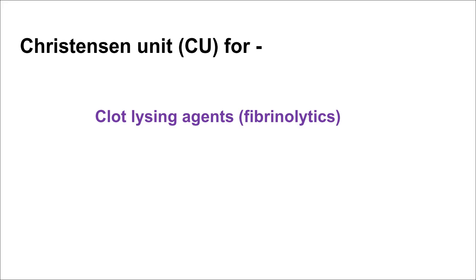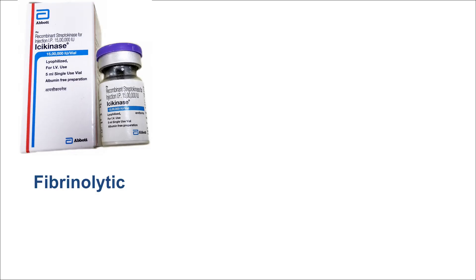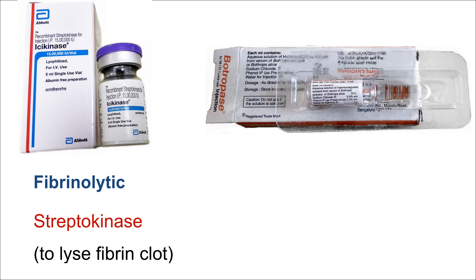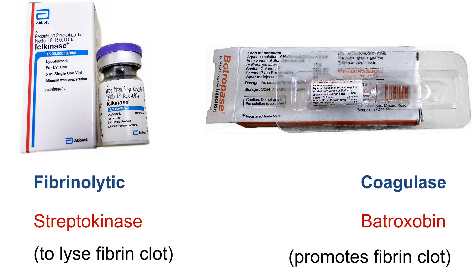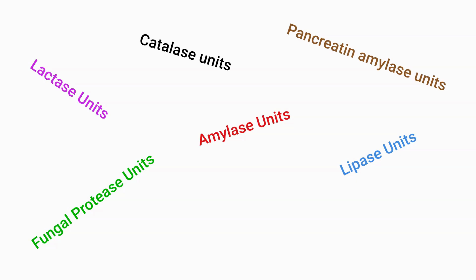Interestingly, the Christensen unit can also be used to quantify coagulases that promote formation of a fibrin clot. Here is a fibrinolytic preparation containing streptokinase used to lyse fibrin clots, and this one is a coagulase preparation with opposing action containing batroxobin that promotes hemocoagulation — and both are quantified in Christensen units. Other similar dose units include amylase units, lactase units, lipase units, fungal protease units, pancreatin amylase units, catalase units, flavozyme units, and many more.